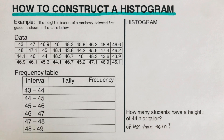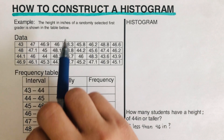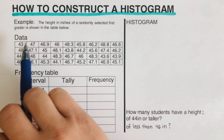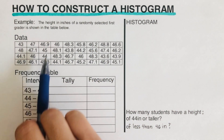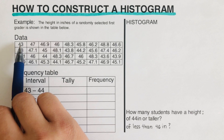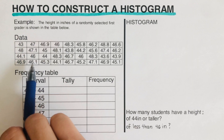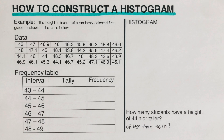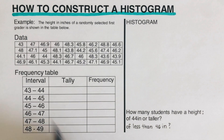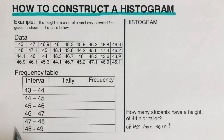To better see how a histogram looks, we are going to go over this example. The height in inches of randomly selected first graders is shown in the table below. This is the data that we have here — the height of randomly selected first graders in inches. We are going to tally this data in a frequency table.